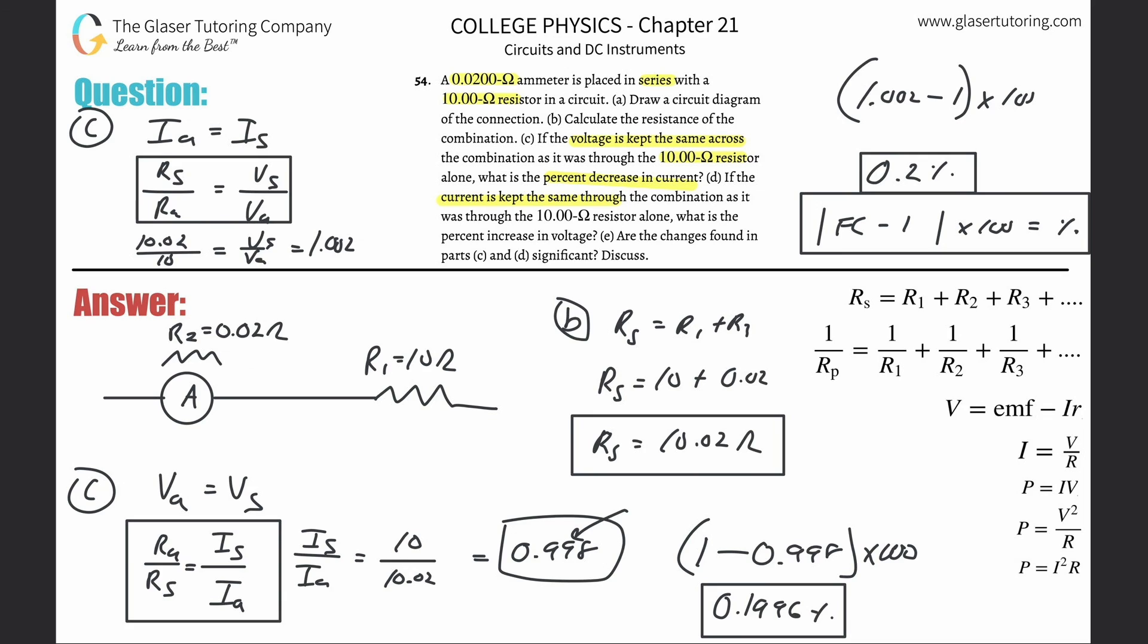You get negative 0.1996. Remember, you've got to take the exact value from before because you might get 0.2 if you use the rounded value, but if you take that exact value, you'll find the exact same answer. Take the absolute value, make it positive, and then multiply by 100.